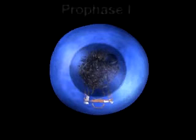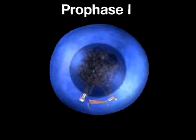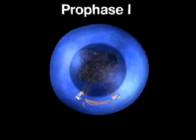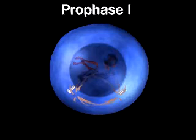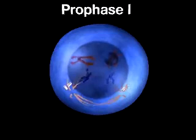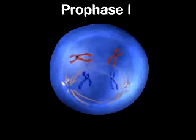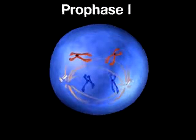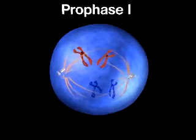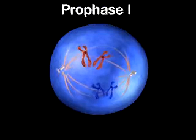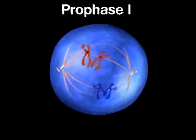During prophase I, the chromosomes coil up and a spindle forms. Then, in a step unique to meiosis, each pair of homologous chromosomes comes together to form a tetrad.